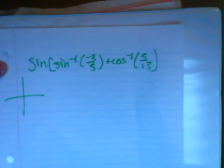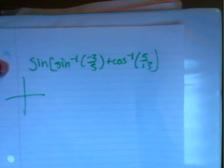Find the exact value of sine of inverse sine of negative three-fifths plus inverse cosine of five over thirteen.